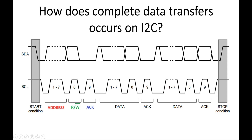Once the acknowledgement bit is received by the master, depending upon the read or write operation, control is given to the master or slave. If it is a write operation, the master will be the transmitter and the slave will be the receiver. If it is a read operation as per the read/write bit, the slave becomes the transmitter and the master becomes the receiver.